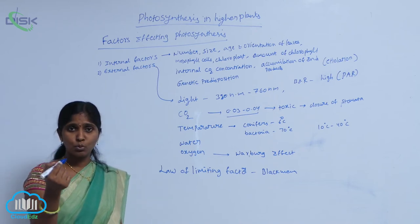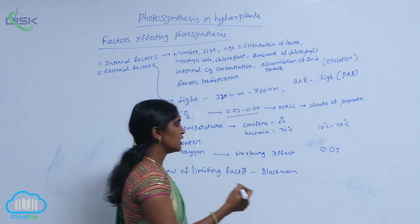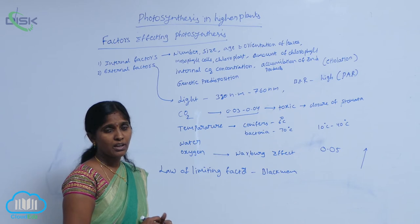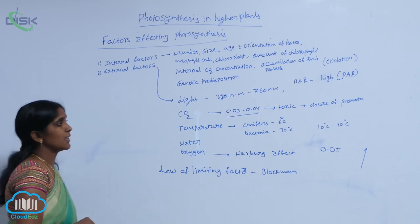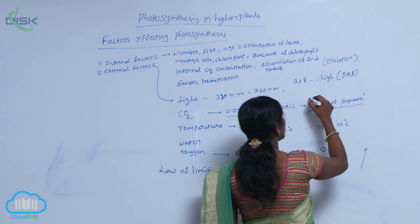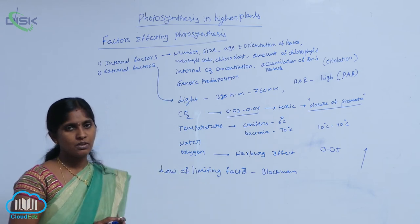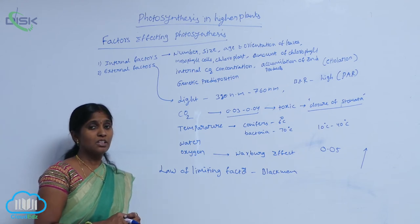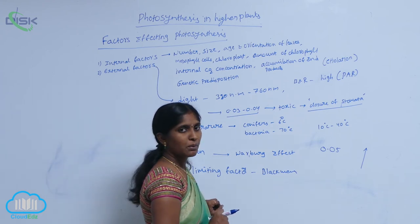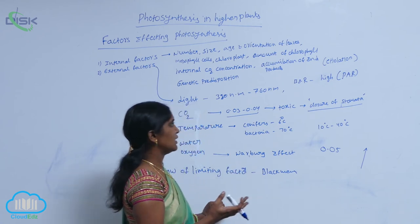Photosynthesis also increases up to a CO2 concentration of about 0.05% only. After that, if the concentration of CO2 keeps increasing, the cells become toxic. High accumulation of bicarbonates makes cells toxic and leads to closure of stomata. When stomata are closed, there is no gaseous exchange, the released oxygen cannot exit, and carbon dioxide accumulates inside the cell, promoting further toxicity.